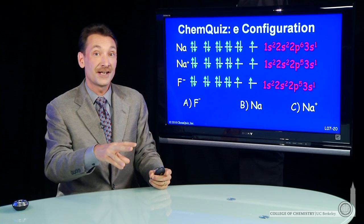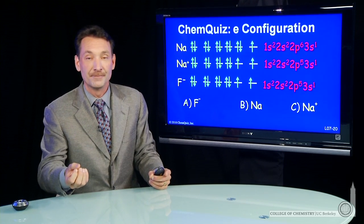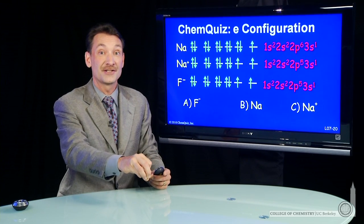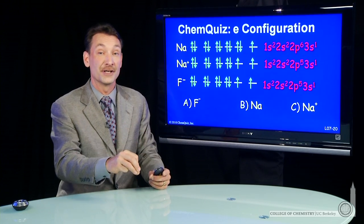If you have to put 10 electrons around an atom, you have to put them in in a certain way. It's the number of protons that determine what the atom actually is, whether it's sodium or fluorine.